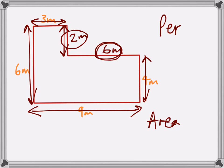So now we have all of the dimensions we can start working out the perimeter. Let's pick a starting point and go clockwise around the edge. Three, add two would give you five, add six would give you eleven, add four would give you fifteen, add nine is twenty-four, and add the last six would give you thirty.